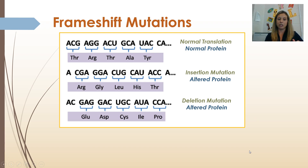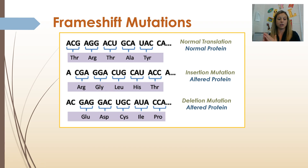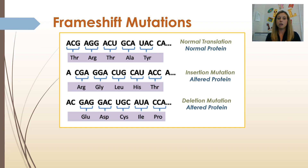A frameshift mutation — this is what the sequence is supposed to be. If you insert a base somewhere where it's not supposed to be, it's going to alter the protein from that point on because it shifts the reading frame of the ribosome — that's why it's called a frameshift mutation. If you delete a base where it's supposed to be, it's going to alter the sequence of three bases, affecting every amino acid from that point forward. Obviously, frameshift mutations are going to have a much more significant impact than a point mutation or substitution.